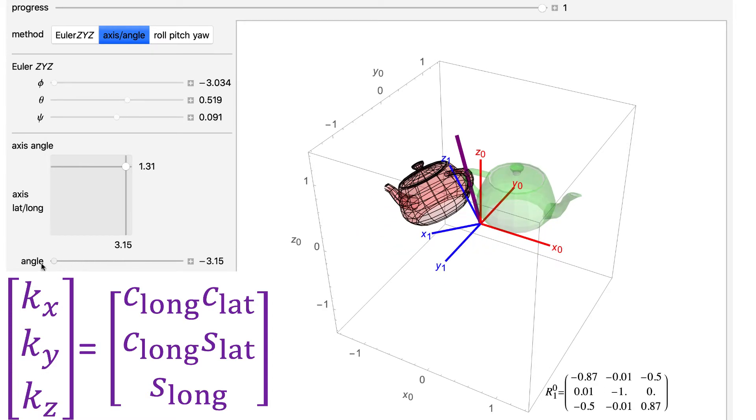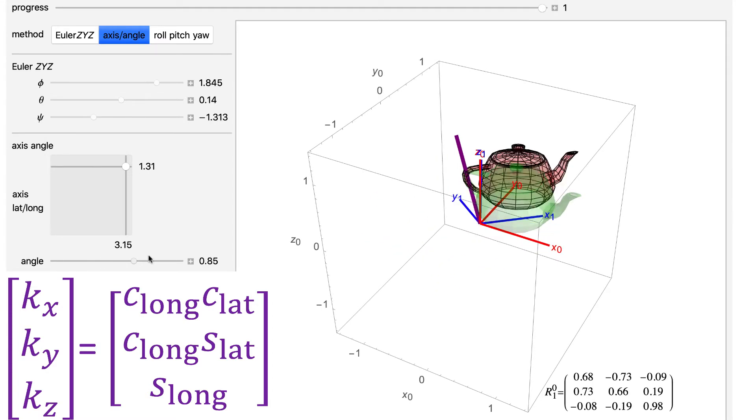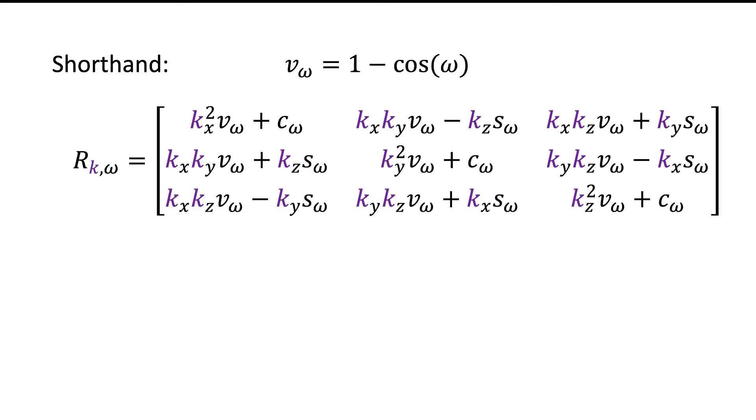We can write this as a matrix and simplify this using the convention that v subscript omega is the versine of omega, which is one minus the cosine of omega. If we do that, we get the following matrix, and these entries map to exactly the same entries as the Euler convention.